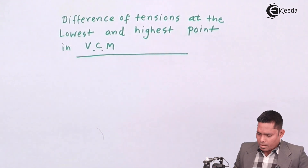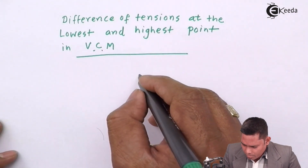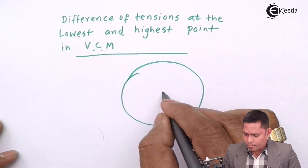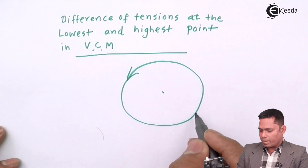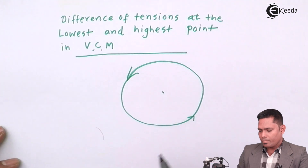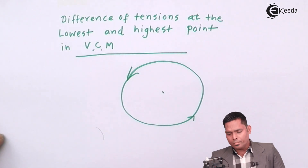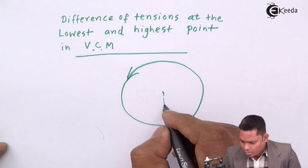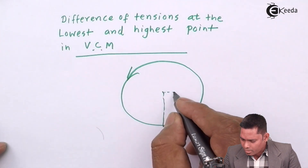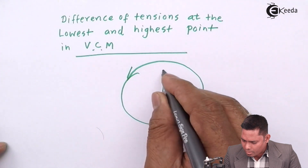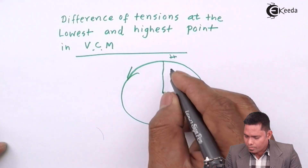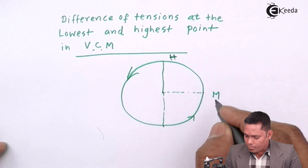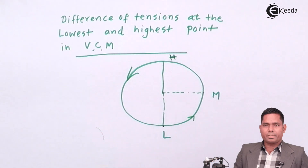Suppose that I have an object moving in a vertical circle in an anticlockwise sense. This is the lowest point L, this is the midpoint M, and this is the highest point H.